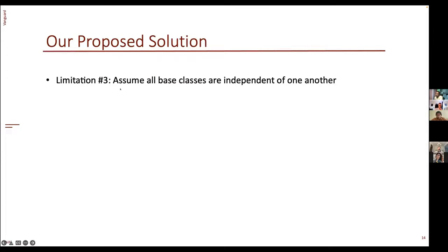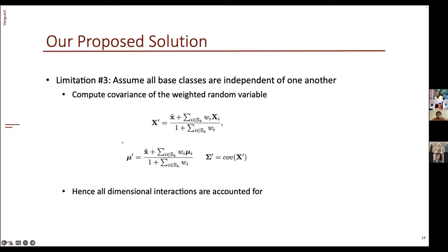For the third limitation — independence assumption between base classes — instead of adding individual covariances, we calculate the covariance of the final weighted random variable itself. We weight each data point from the different base classes by their degree of similarity and form a new combined random variable X'. We then calculate the mean and covariance of this X' directly. This way, all dimensional interactions are taken into consideration.